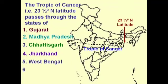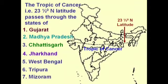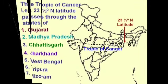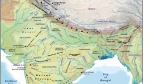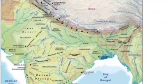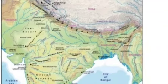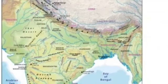Now we will discuss what is the standard meridian. The standard meridian is the particular line from where the local time of every country is recognized. In India, the standard meridian is situated at 82 and a half degrees East.